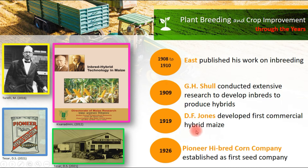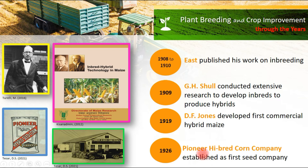In 1919, D.F. Jones developed the first commercial hybrid maize. In 1926, the Pioneer Hybrid Corn Company was established as the first seed company.